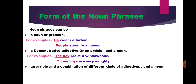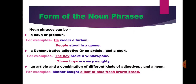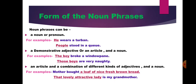A noun phrase can also be an article combined with different kinds of adjectives and a noun. Example: 'Mother bought a loaf of nice fresh brown bread.' Here, 'a loaf of nice fresh brown bread' — the words nice, fresh, brown are all adjectives describing the noun bread, so this combination is a noun phrase. Another example: 'That lovely attractive lady is my grandmother.' The words that, lovely, and attractive are different kinds of adjectives, so this combination is a noun phrase.